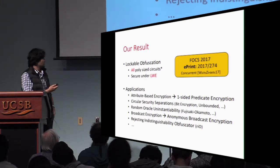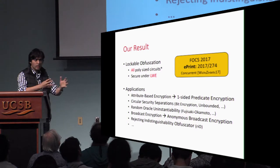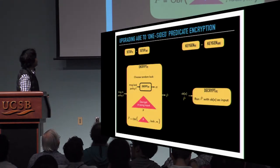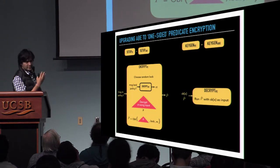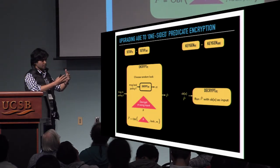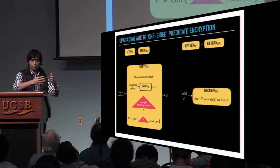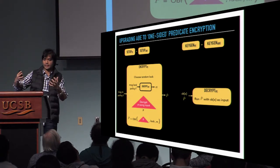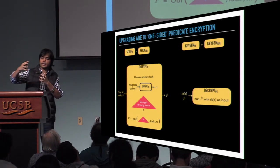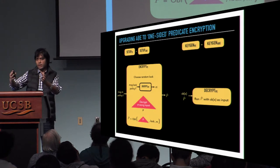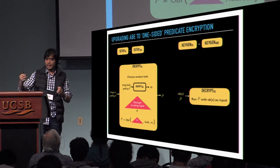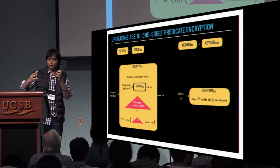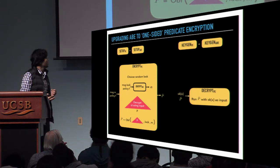In the remaining 50 seconds, I'll quickly tell you about how to use lockable obfuscation. I'll try to describe the main application, which is to get one-sided predicate encryption from attribute-based encryption. In attribute-based encryption, we want decryption to work on ciphertext such that when you encrypt a message it also takes some attributes. And if you have the secret key which is associated to a policy, you can decrypt it if the policy satisfies those attributes.